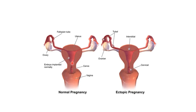This picture shows a normal pregnancy in which the embryo implants in the uterine cavity. This picture shows ectopic pregnancy. The various sites include the fallopian tube, ovary, cervix, and interstitium.